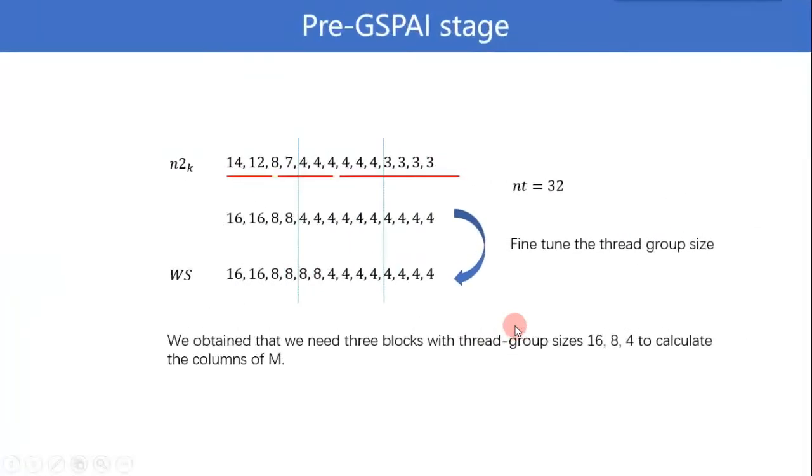Then, we use a matrix as an example to illustrate this strategy. Assuming that M has 14 rows and 14 columns, the number of non-zero items of 14 columns is shown in the area n2_k and we set nt equals 32. Based on formula 1 and 2, the number of threads assigned to 14 columns is shown in the second line.